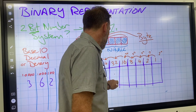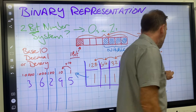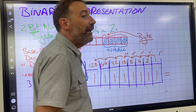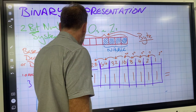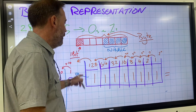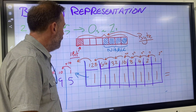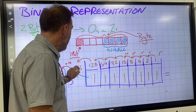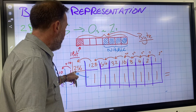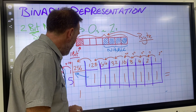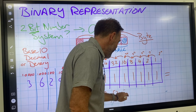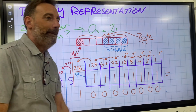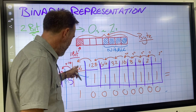To get 256, you'd have a 1 followed by all zeros — that's a 9-bit number reading 100000000, which equals 256. So 1 lot of 256.